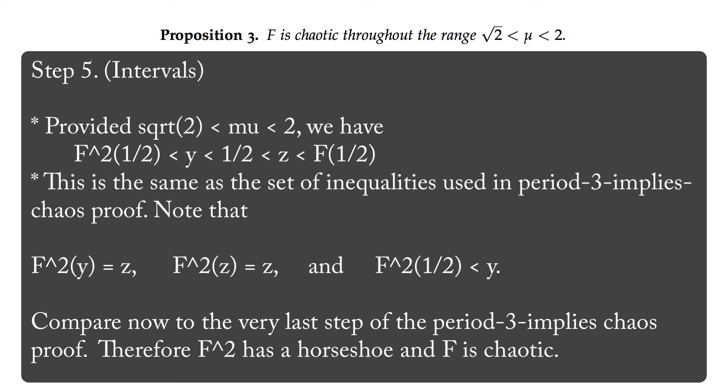This is identical to the list of inequalities that we had set up in our period 3 implies chaos proof. So the rest of that proof follows, and f squared has a horseshoe, and f is chaotic.